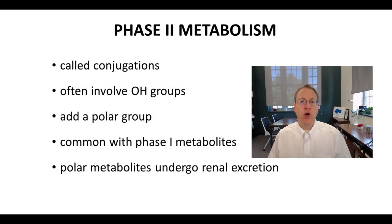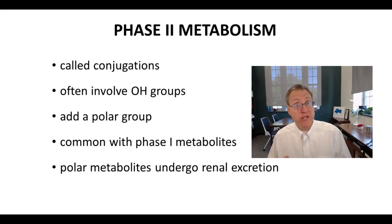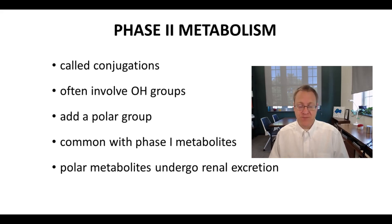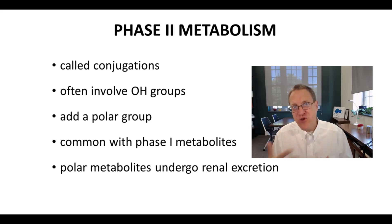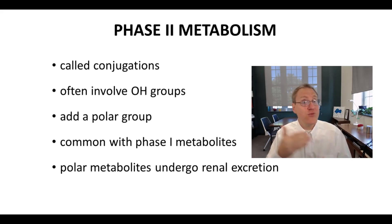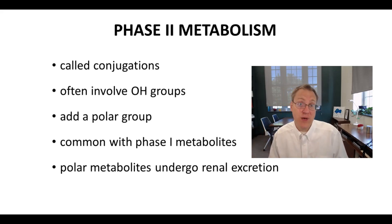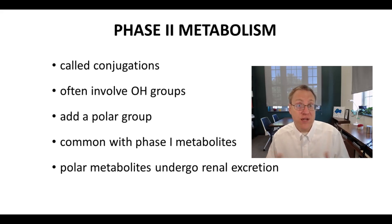Phase II metabolic reactions are often called conjugations. They often begin with an OH group or an NH group on a molecule — maybe on your drug or perhaps another metabolite. We take that OH group and use it as a handle to connect a more polar group to our molecule, to conjugate a polar group to our structure. These Phase II metabolism reactions very often occur on Phase I metabolites: the Phase I reaction creates the OH group, and then that OH group can react in a Phase II reaction. Phase II metabolites tend to be very polar and are readily excreted by the kidneys.